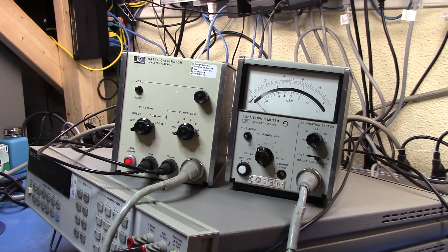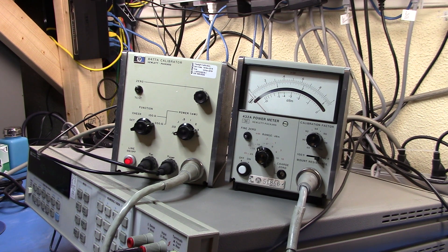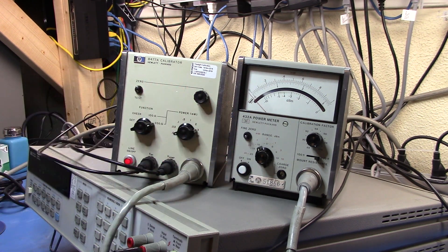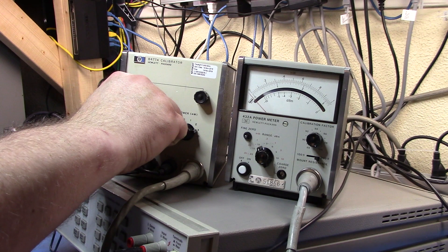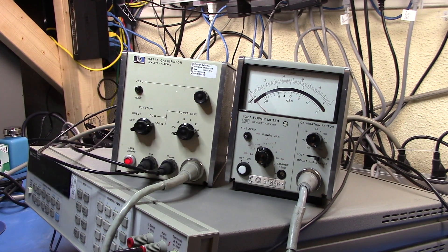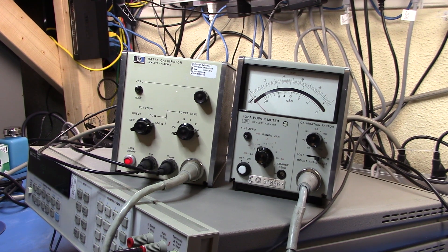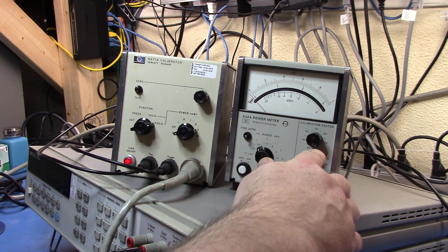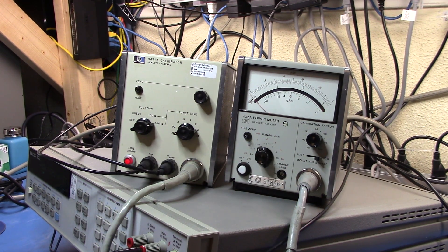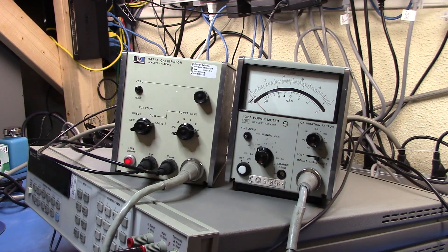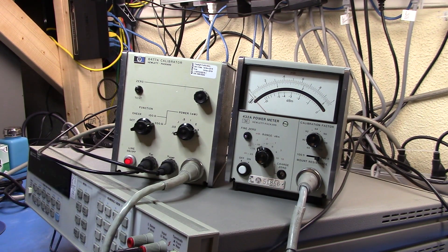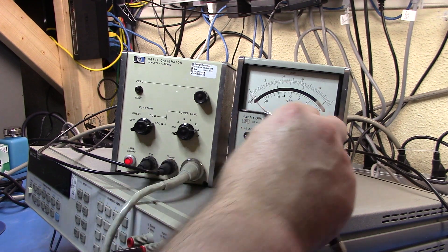The first thing we need to do is set up our calibrator. Want to set that to 0.01, set that to 200 which is the mount resistance, and then we're going to set zero test to zero. On the 432A we got 200 here. We're going to do 1 milliwatt range, 0.1 milliwatt range. That turned on and calibration factor should be 100.